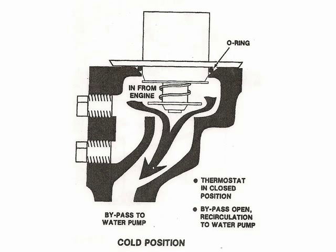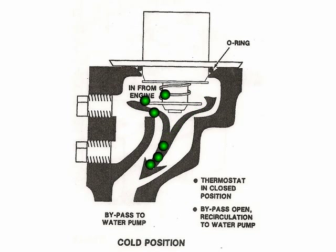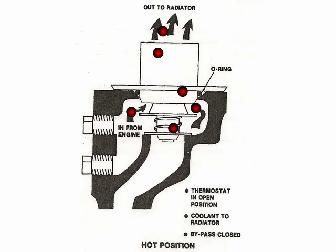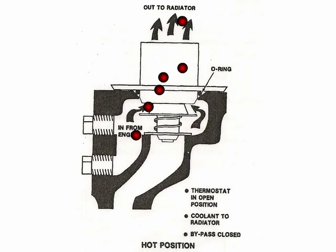Thermostat operation: When the engine coolant temperature is below operating temperature, the coolant flows through the bypass passage back to the water pump because the radiator outlet port is blocked. As the engine reaches operating temperature, the thermostat opens, directing coolant towards the radiator. This also closes the bypass opening.